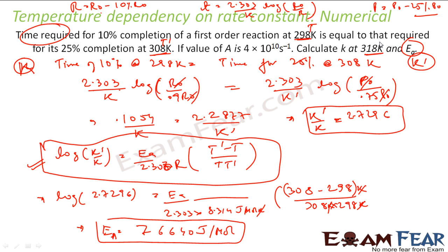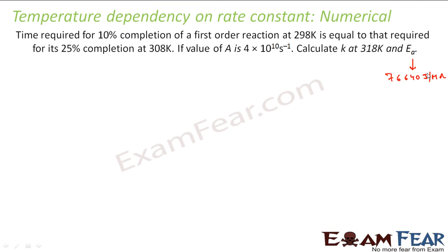So we have found activation energy. We can easily find K at any temperature. A is also given. We have to find K. So we know this formula: K is nothing but A e to the power minus EA by RT, the golden formula.